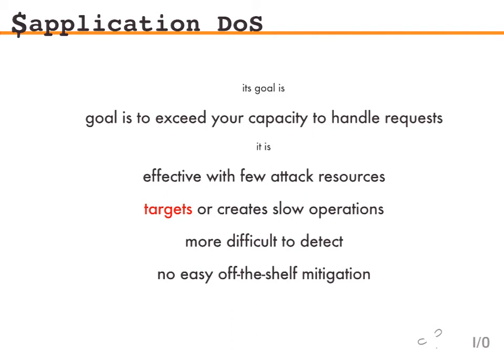Some of the characteristics: it's effective with few attack resources — a disproportionate attack. You can do this with one laptop against a lot of sites, and that's really dangerous. It often targets slow operations. It can be difficult to detect — you don't necessarily need to flood the target with a lot of traffic, meaning attacks can hide in the noise. And there's no easy off-the-shelf mitigation; you can get Cloudflare in front of you, but it's not just a simple buy-a-device-and-put-it-in-line solution.